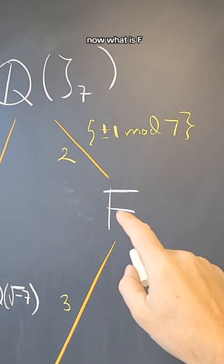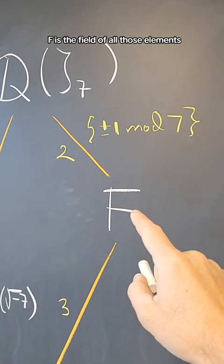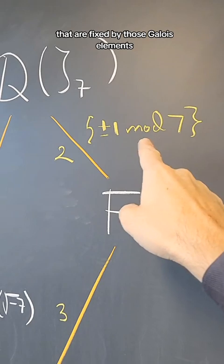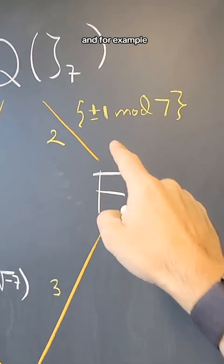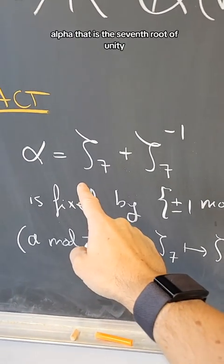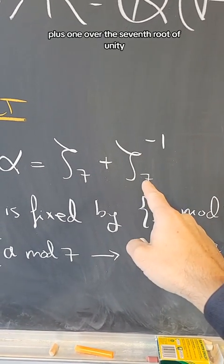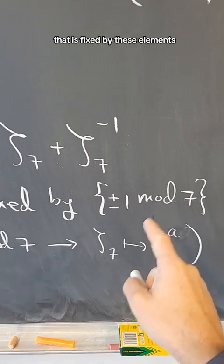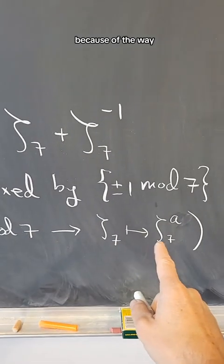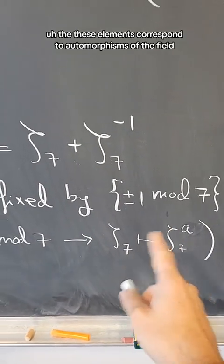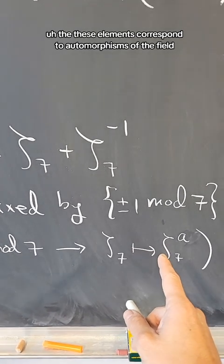Now, what is f? f is the field of all those elements that are fixed by those Galois elements. And for example, α, that is the seventh root of unity plus 1 over the seventh root of unity, that is fixed by these elements because of the way these elements correspond to automorphisms of the field.